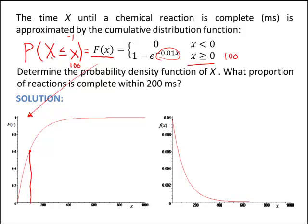So the probability, the time it takes for a chemical reaction to be complete in less than 100 milliseconds is given by the point on this capital F of x graph.